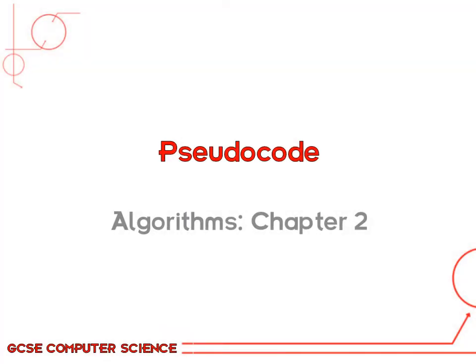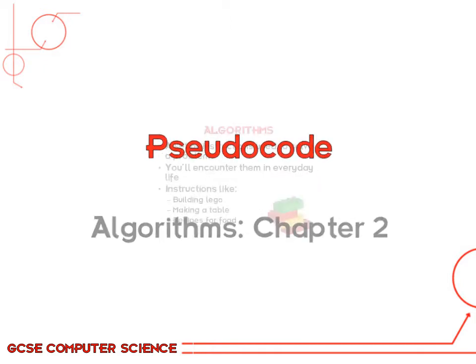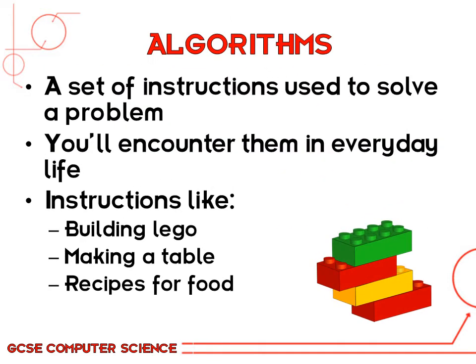In this chapter we're going to look at pseudocode, which is the doorway into you starting to make your own computer programs. Now an algorithm, as fancy as the word sounds, is actually quite straightforward. It's basically a set of instructions used to solve a particular problem.